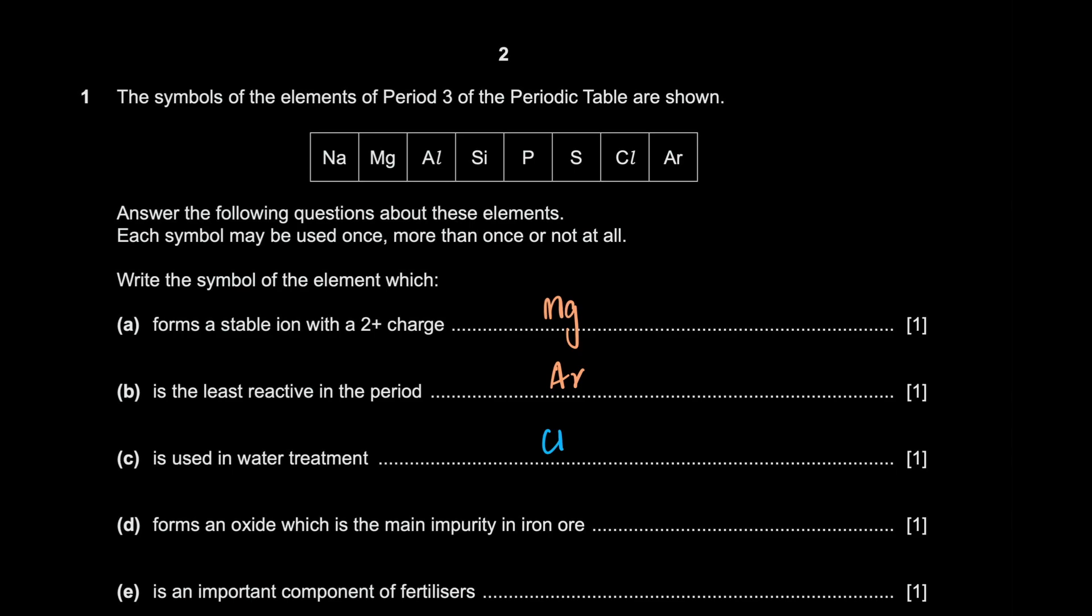Forms an oxide which is the main impurity in iron ore. This might be a little confusing for some but you gotta realize that iron ore is extracted from earth, right? It's filled with dirt. So sand, that's the main impurity. So silicon, not silicon dioxide. We're referring to silicon dioxide but the answer is silicon.